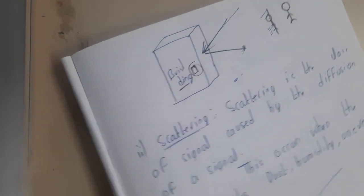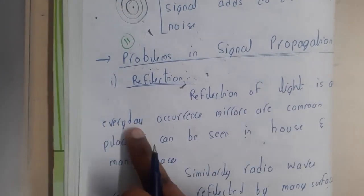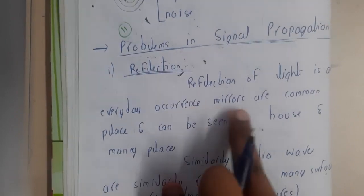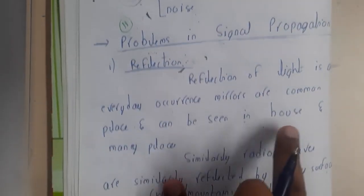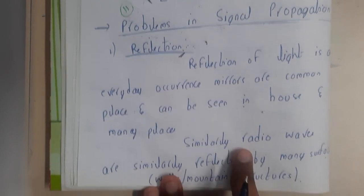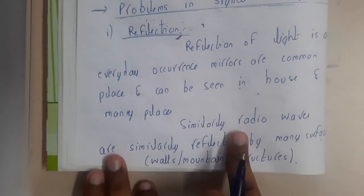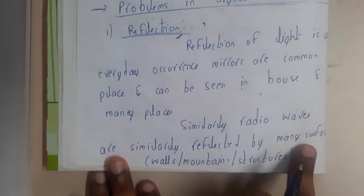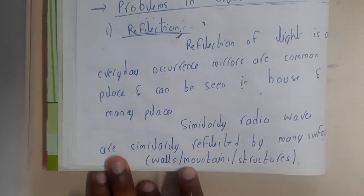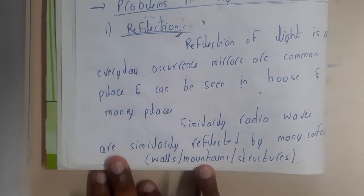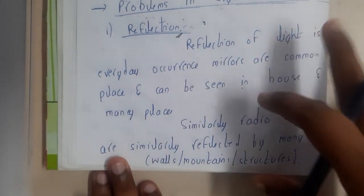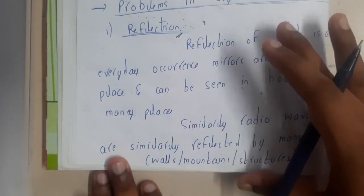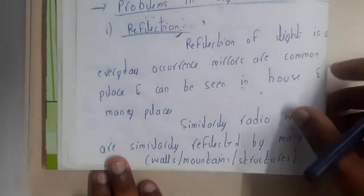Reflection of light occurs every day — mirrors are common and can be seen in houses and many places. Similarly, radio waves are reflected by many surfaces like walls, mountains, and different structures like billboards. This also leads to issues with signal propagation.